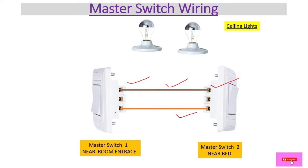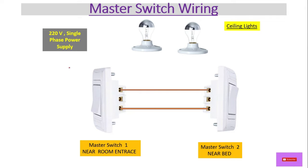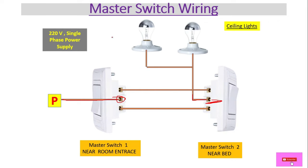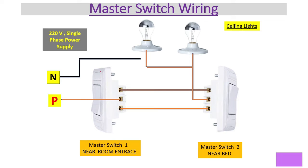We have the remaining common points on both switches. Now we provide the supply — we have a 220V single-phase power source. The live wire connects to the common terminal of the first switch, and from the common terminal of the second switch it goes to the loads — two ceiling lights. The lights also require neutral, so the black wire provides neutral to both loads.